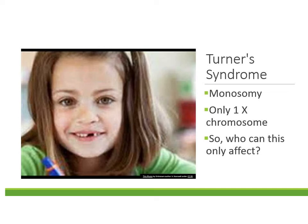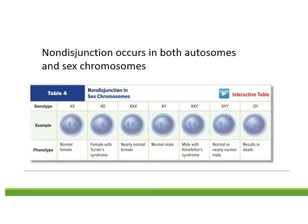An example of having just one chromosome is Turner syndrome. Turner syndrome occurs when there's monosomy — just one X chromosome with no second sex chromosome. This only affects females, so Turner syndrome only occurs in females, leaving them with just a single X.